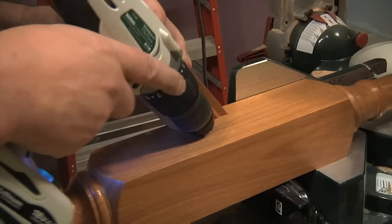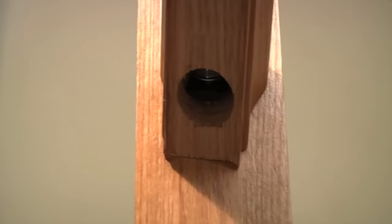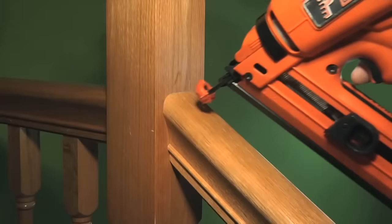Drill a pilot hole in the newel post at the same angle as the handrail. Install the bolt. Then in the handrail, drill a pilot hole for the bolt and a larger hole for the nut. Apply glue and slide the rail onto the bolt and tighten the nut. Attach the handrail at the top with finishing nails.